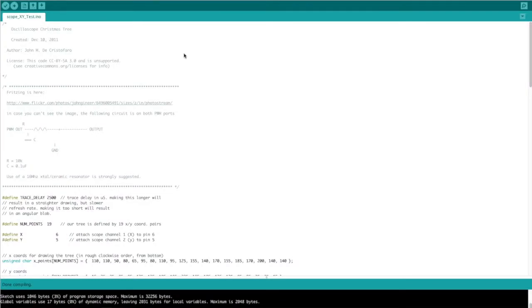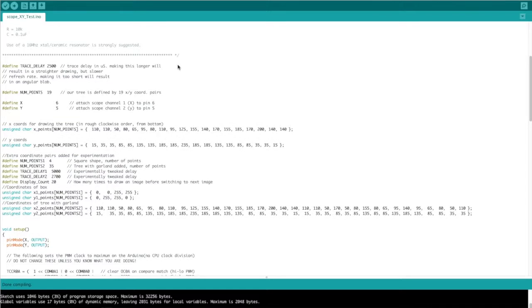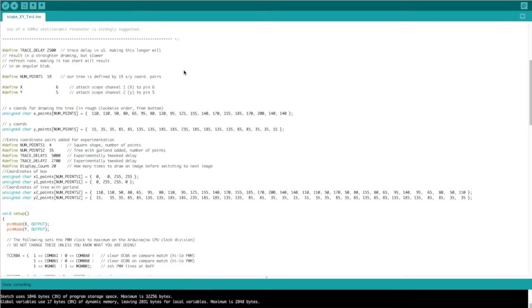I modified the original program, which I will link to in the description, to add a few more sets of X and Y points. The original X and Y coordinates draw the Christmas tree, but then I added another set to draw a square as a demonstration and another set to draw an enhanced Christmas tree with garland decorations, just to show how it all works.